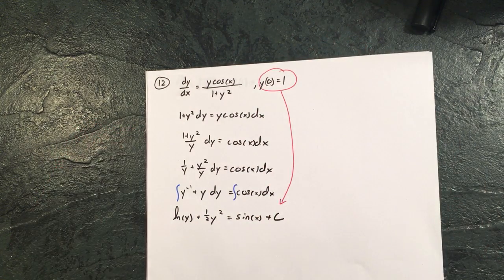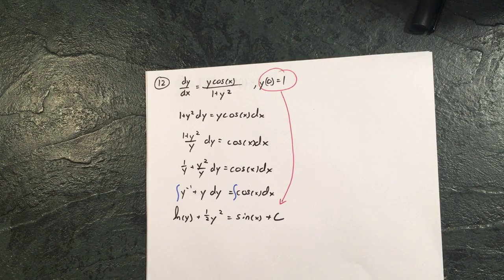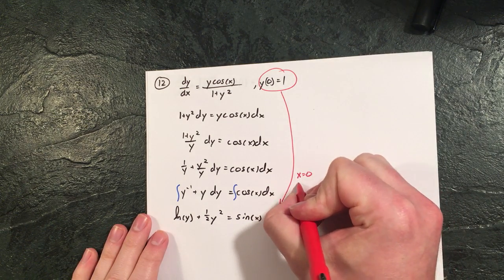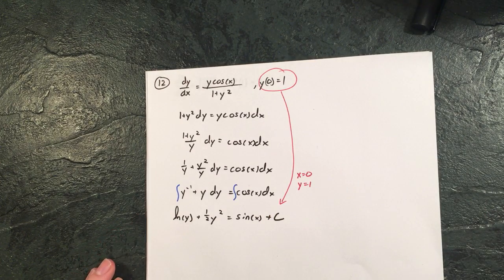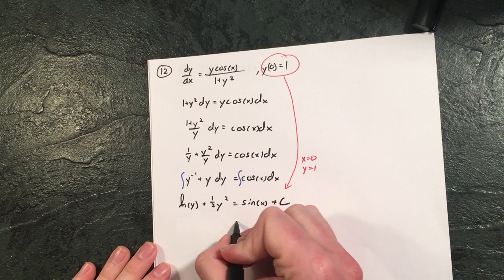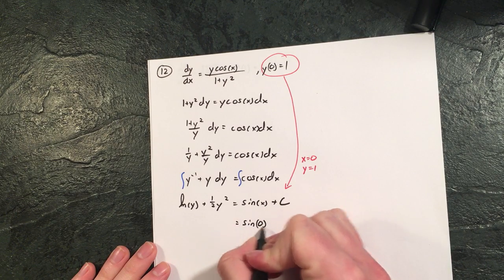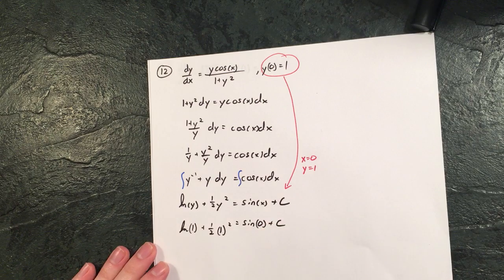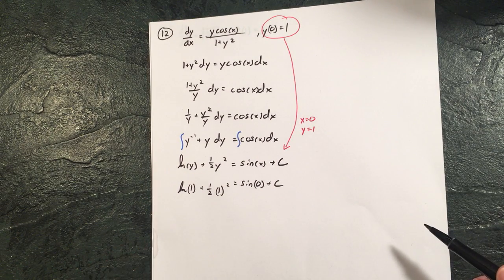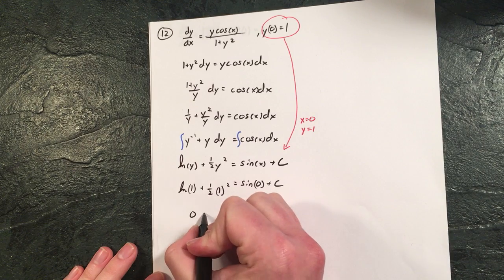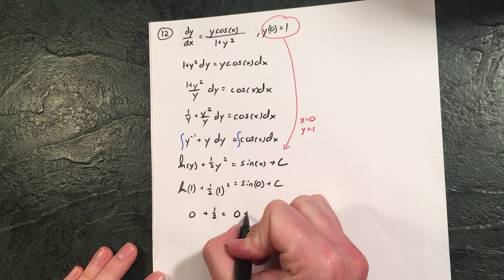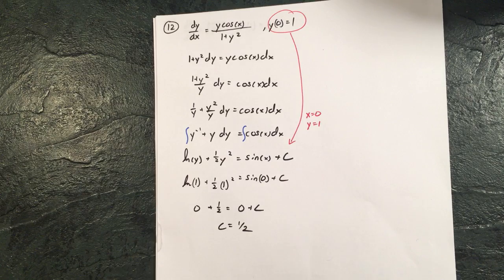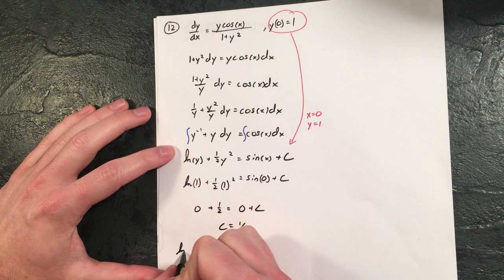Okay, once we get here we've done the hard part. We've got to figure out what that c is though. So we have that initial value that they're telling us about, y of 0 equals 1. That's saying when x is 0, y equals 1. So let's actually input those numbers. When x is 0 we know that y is 1. So we have 0 plus 1 half equals 0 plus c. C is 1 half here and we can rewrite the statement a couple lines above and that is going to be our final answer.